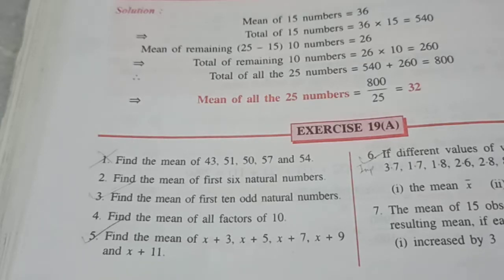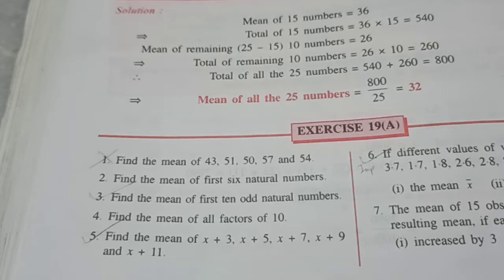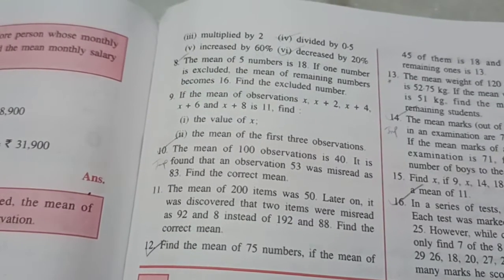Mean in simple language is to find the average. Now you can cancel question 1, it's very easy. And mark sums 6, 10 and 14 as IMP.